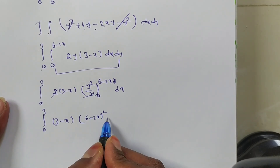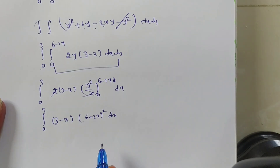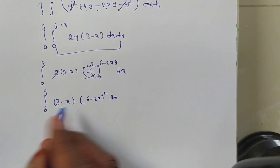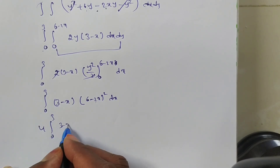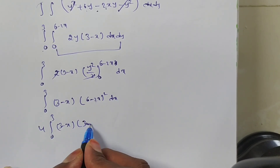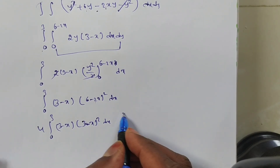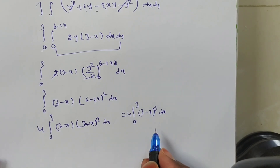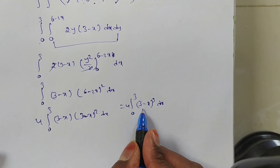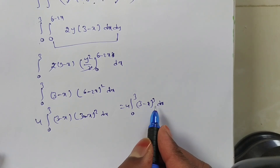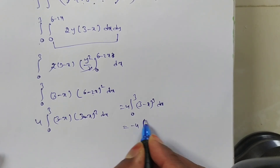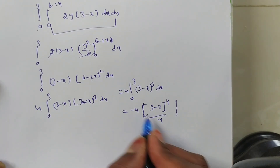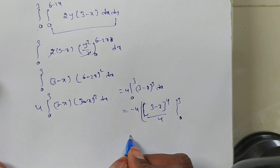Substituting the upper limit y = 6 − 2x: (6 − 2x)². Taking 2 common from (6 − 2x): 2(3 − x). So (6 − 2x)² = 4(3 − x)². Multiplying by (3 − x) gives 4(3 − x)³. So the integral is 4 × (1/2) × ∫₀³ (3 − x)³ dx = 2∫₀³ (3 − x)³ dx. The 4 and 4 cancel leaving minus half.